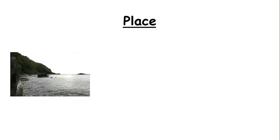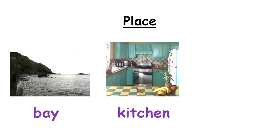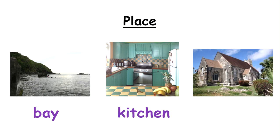Now let's look at place — nouns can name a place. What is this place? It is a bay, so 'bay' is a noun — that's the name of a place. This is a kitchen, so 'kitchen' is the noun. And this place is a church, so the word 'church' is a noun. Nouns can name a place.